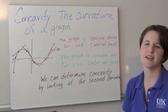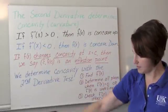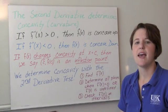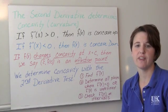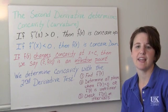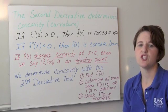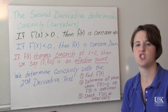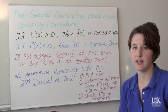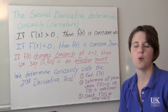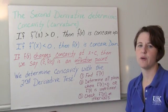We're going to determine the concavity by looking at the second derivative. A graph is concave up when the second derivative is positive, and a negative second derivative means the graph is concave down. If a graph changes concavity — in our previous graph it changed from concave down to concave up — we call that point the inflection point. We determine concavity with the second derivative test.